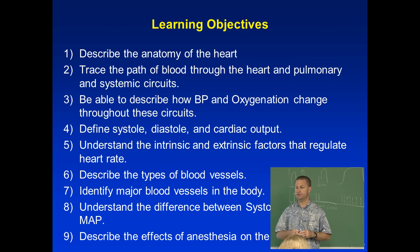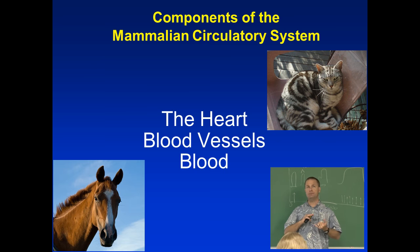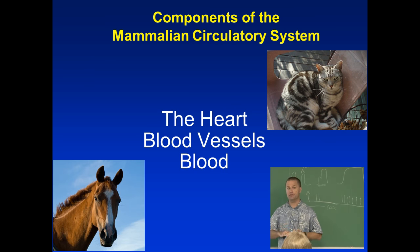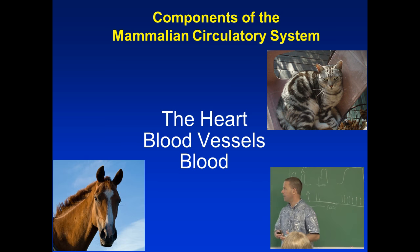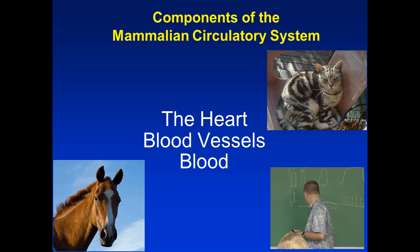The heart is part of the circulatory system along with the blood vessels and the blood. The heart is the pump that pumps the blood through, the blood vessels are the plumbing, and the blood is the tissue that we're pumping through.